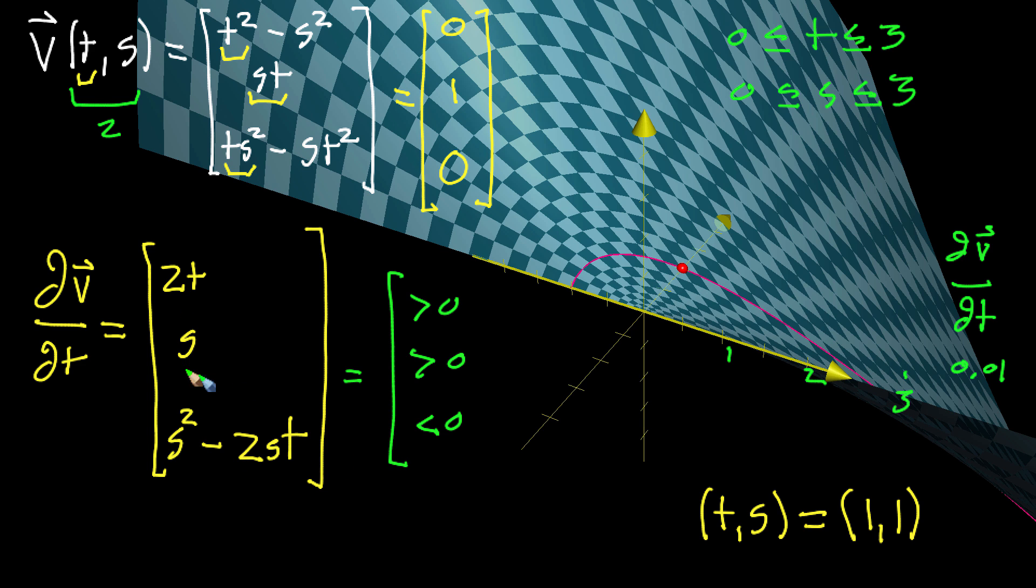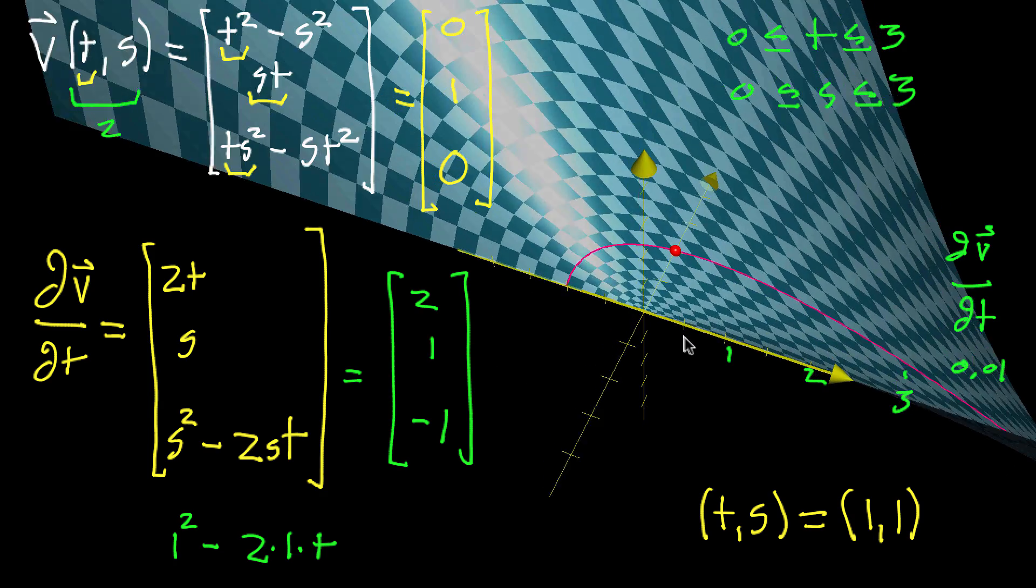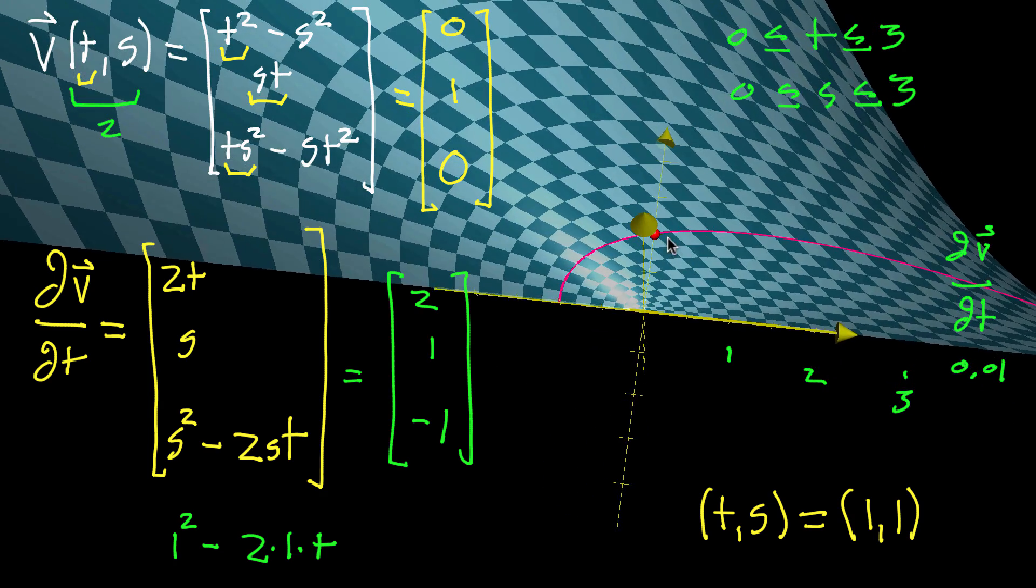And with that being our prediction, if you start plugging in 1, 1 to t and s, what you'll see is that 2 times 1 is 2, S equals 1, so that's just 1. And then over here, this looks like 1 squared minus 2 times 1 times 1. So this will be 1 minus 2, that's negative 1. So it is, in fact, that kind of positive, positive, negative pattern that you're seeing.